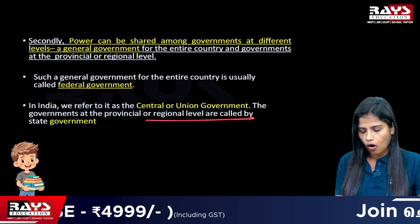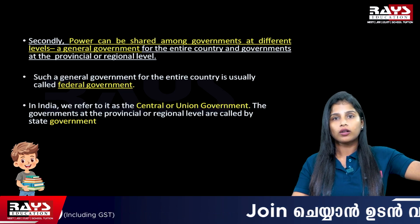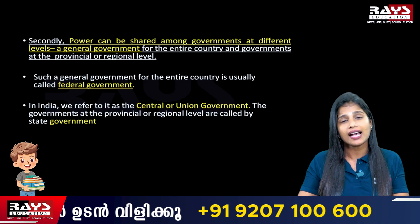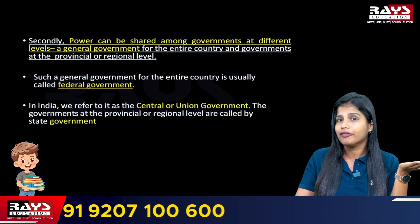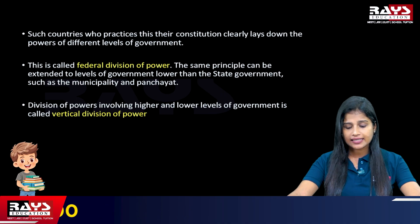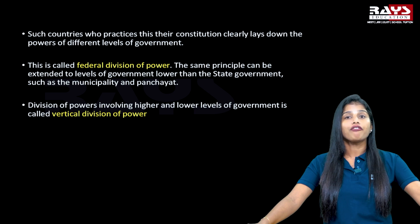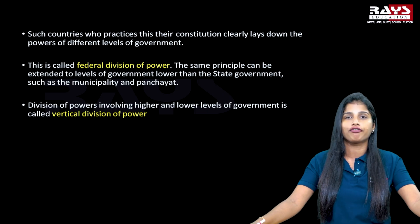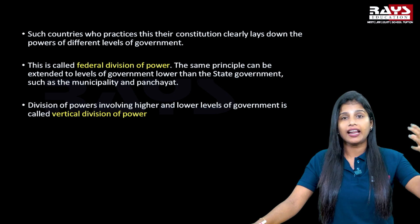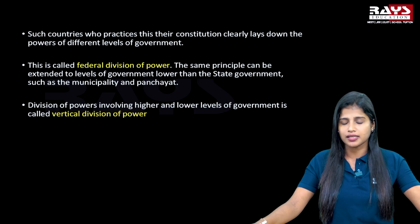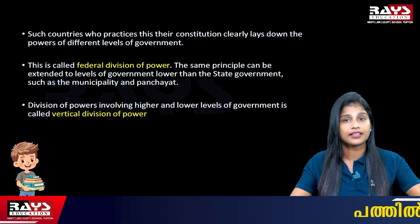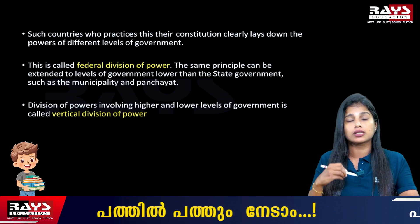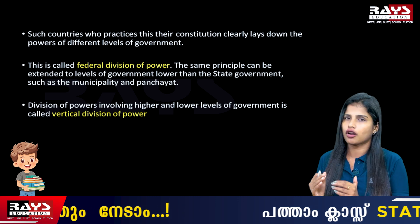In India, we refer to the central government as the union government. The government at the regional level is called the state government, and beneath that we also have local self-government. In countries that practice this system, the constitution clearly lays down the powers of each level of government. In case of conflicts between the central and state governments, the distribution of powers is clearly mentioned in the constitution, so conflicts can be resolved. This form is also known as federal division of power.